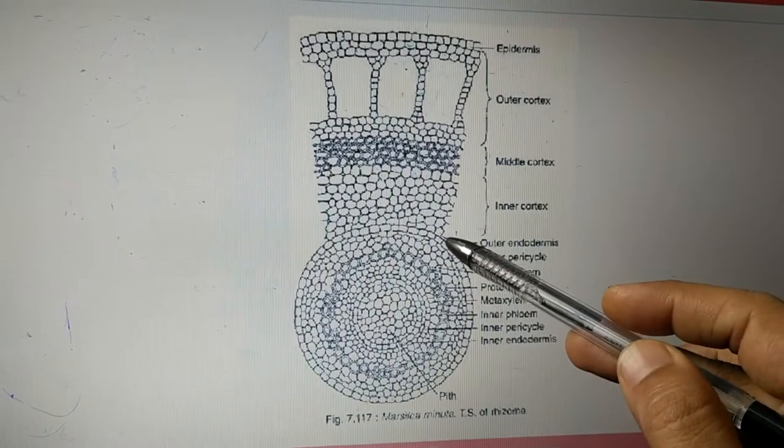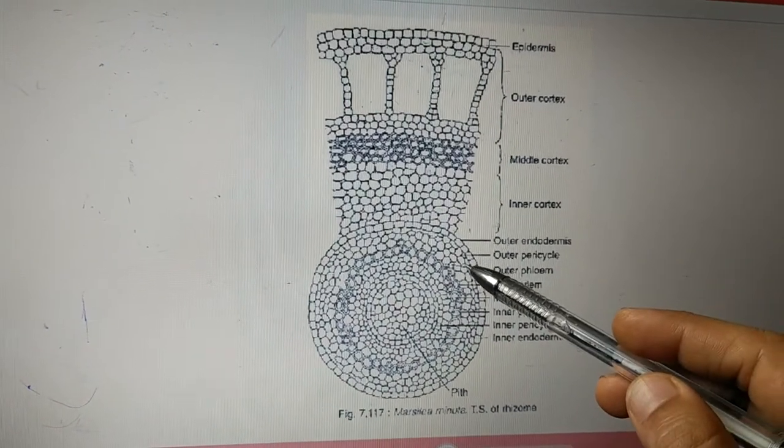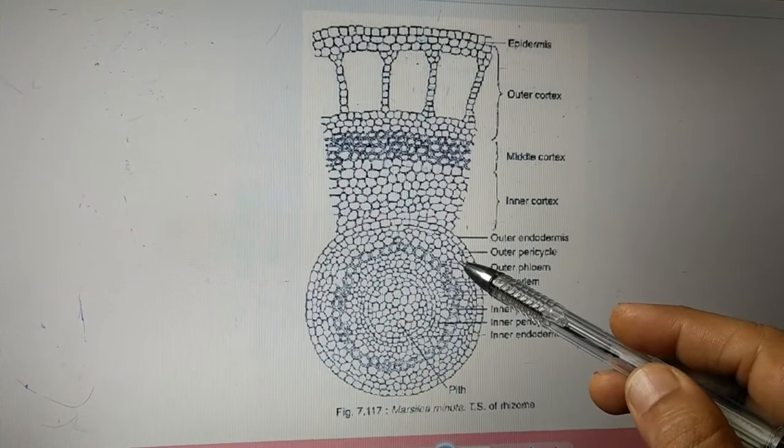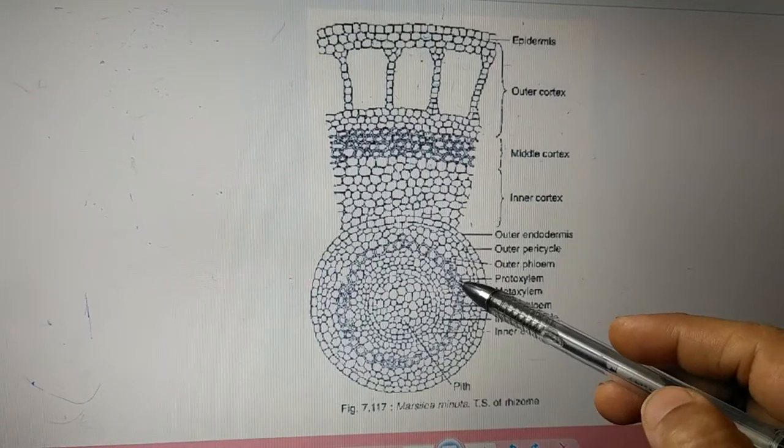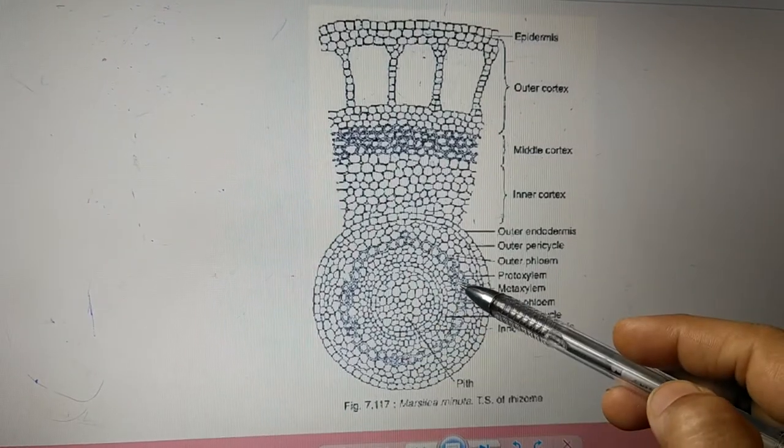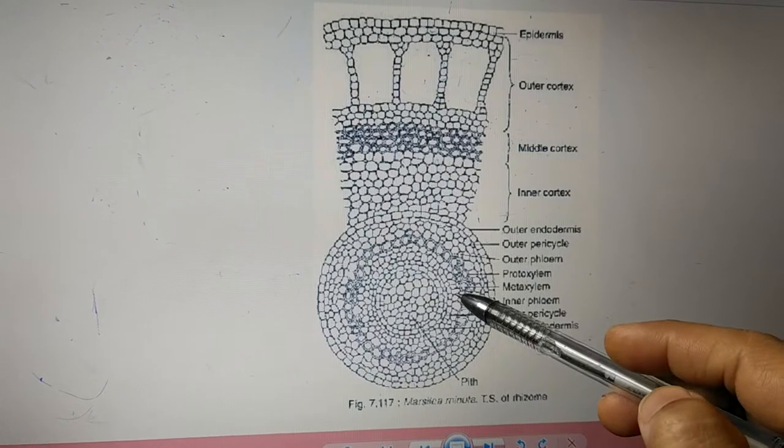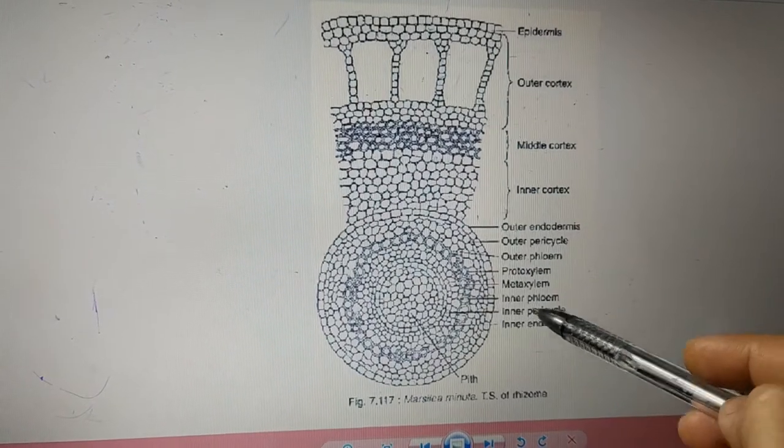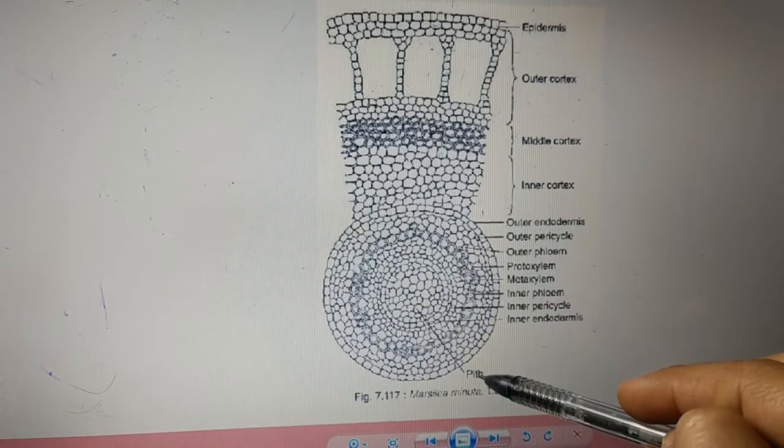Next to the cortex we have the outer endodermis. Next to endodermis, the outer pericycle. Next to outer pericycle we have the outer phloem. Next to outer phloem we will be having protoxylem followed by metaxylem, the xylem ring. This xylem ring is having inwardly the inner phloem. Next to inner phloem we have inner pericycle. Next to inner endodermis we have pith.